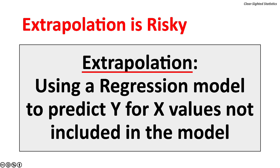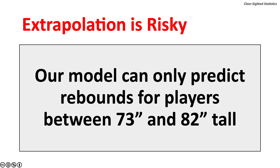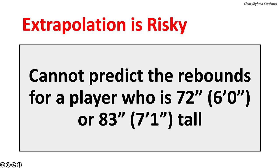Beware — extrapolation is risky. Extrapolation is using a regression model to predict Y for values of X not included in the model. This model can only predict rebounds for players between 73 and 82 inches tall; it cannot predict rebounds for a player who is 72 or 83 inches tall.